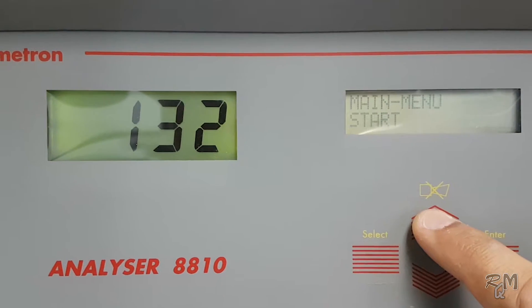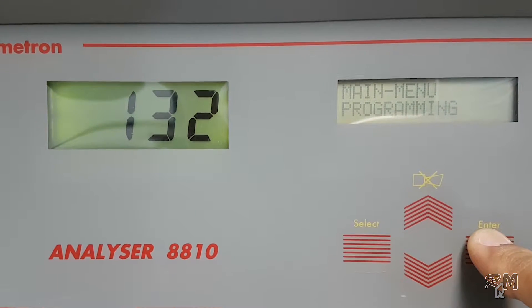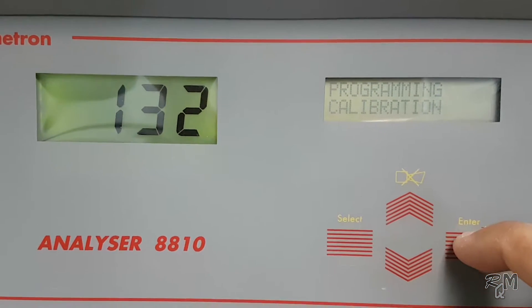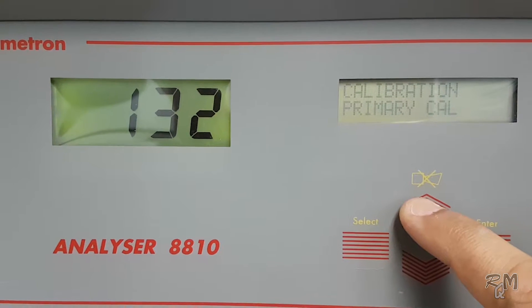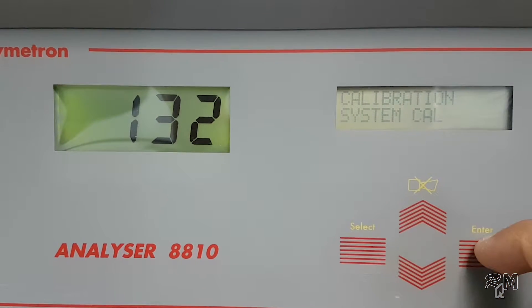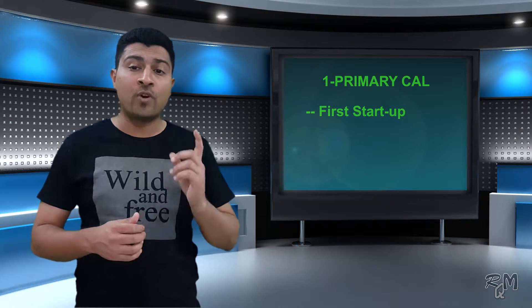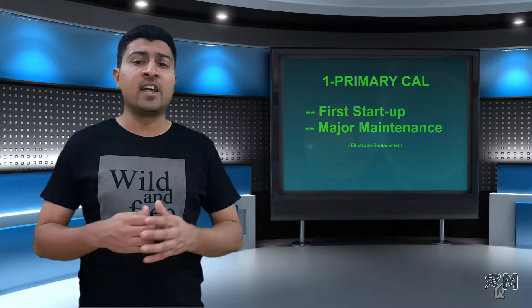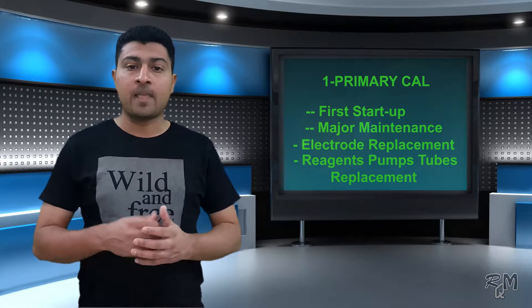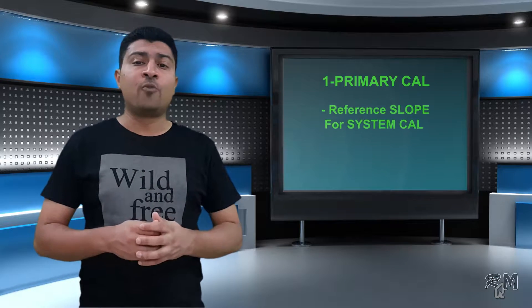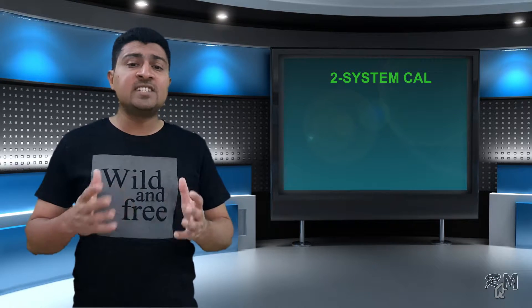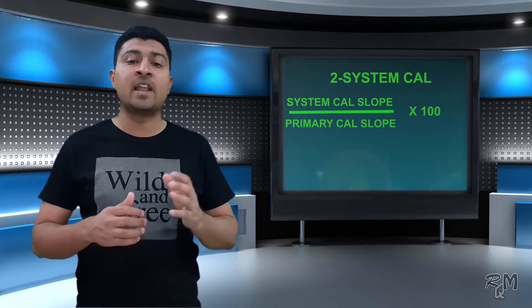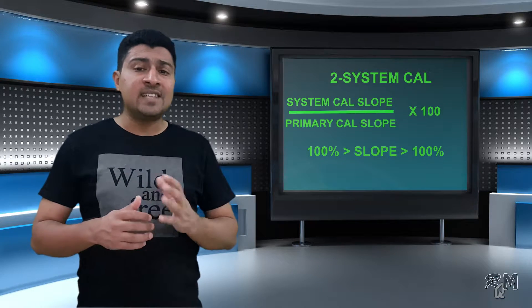Select programming and press enter for 3 to 5 seconds to go inside the programming menu, then enter to calibration menu. Inside the calibration menu there are two options: number one is primary calibration, and number two is system calibration. The primary calibration menu is used when the analyzer is started for the first time, or after any major maintenance like electrode replacement or after reagent pump tube replacement. Primary calibration creates the primary slope for reference of the next calibration. After primary calibration, slope is always 100%.